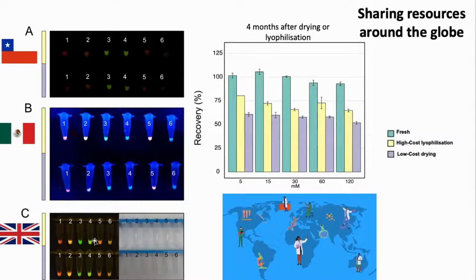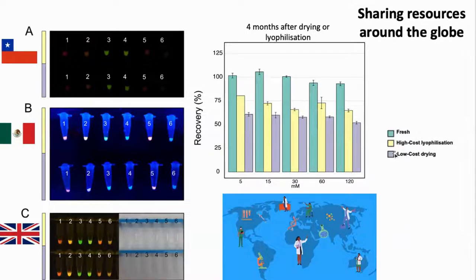I decided to keep the samples in my drawer and after two months challenge the system — we could still have active extracts. After four months, as expected, the high-cost lyophilization system had better yields, but the low-cost drying system performed really well. Considering the initial cost difference — 25,000 pounds versus 100 pounds for the dryer — it is definitely worth using the low-cost approach.